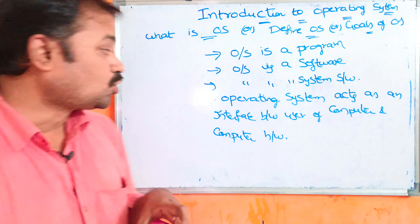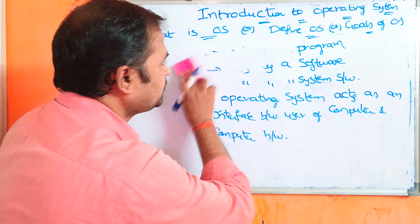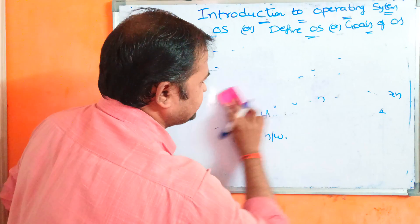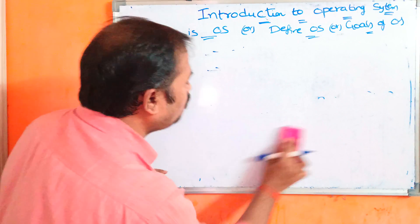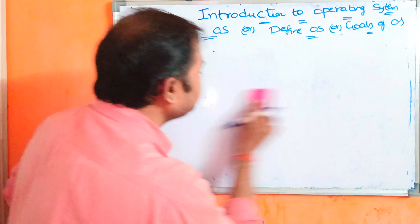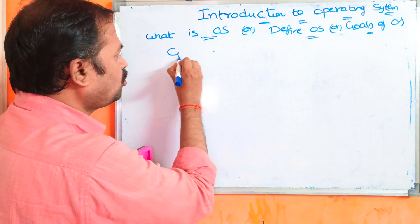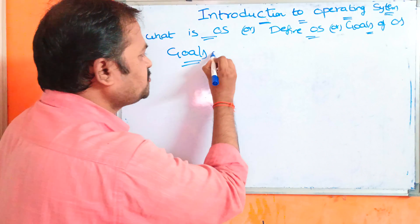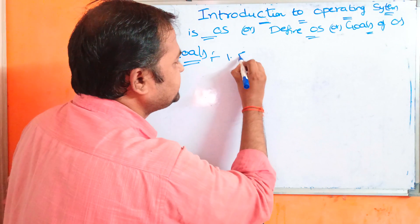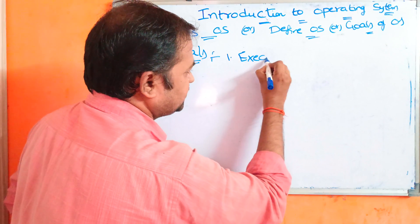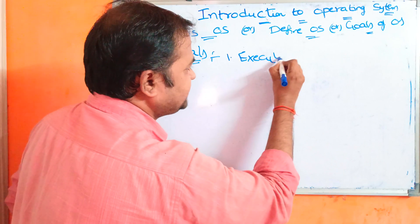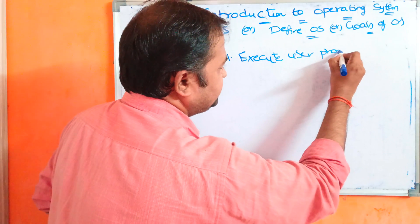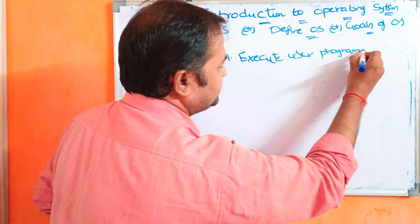Now let us see the goals of an operating system. Mainly we have three goals. The first goal is to execute user programs.